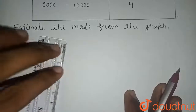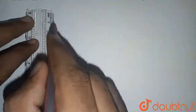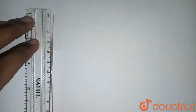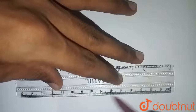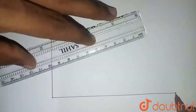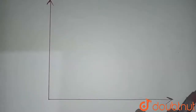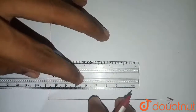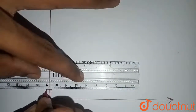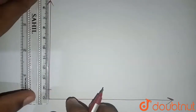For the graph, we will draw the y-axis and the x-axis. On the y-axis, we will take a difference of two — that means one centimeter is equal to two. On the x-axis, we will take one centimeter equal to one thousand and start from three thousand.